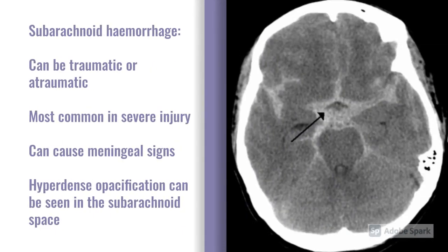The next example is a subarachnoid hemorrhage. You see these in high mechanism injuries, giving blood in the subarachnoid space. One analogy — it looks a bit like a squashed frog, which you might appreciate from the images shown. Clinically, this gives a severe headache. You can get meningeal irritation, so a lot of these patients have neck stiffness. The GCS may be reduced and there may be some photophobia as well.